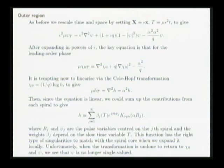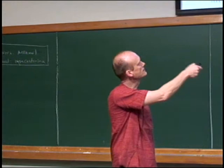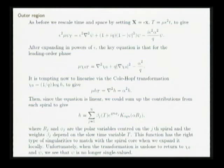You follow the same procedure as for vortex solutions. You rescale space with epsilon, rescale time with mu epsilon squared, and go through the usual inner and outer expansion procedures. The key equation, as always, is the equation for the leading-order phase in the outer region. This is a combination of the two equations shown so far: the first two terms are what we got for vortex solutions, and the remaining terms are the nonlinear equation from a single spiral. So I've now got a nonlinear equation for the leading-order phase in the outer region — but it is still a Riccati equation, so it is still linearizable by the Cole-Hopf transformation.